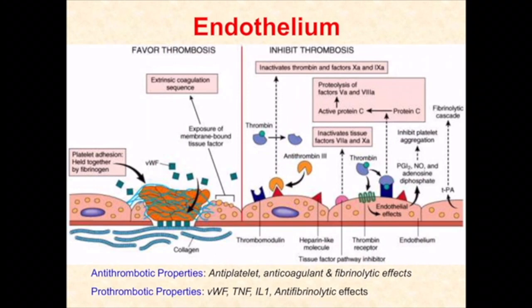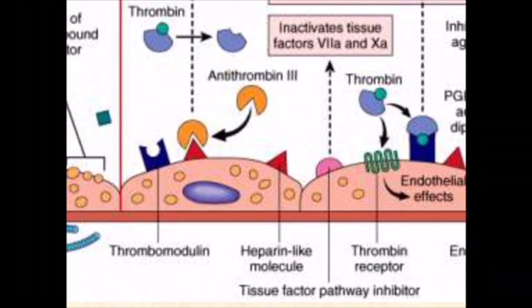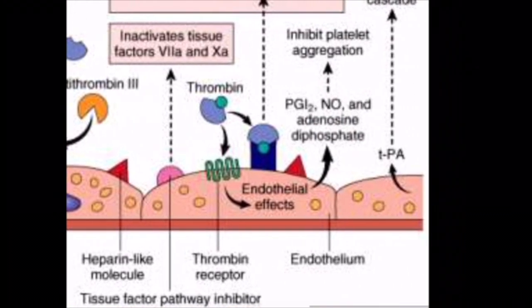This diagram represents properties of endothelium that favor and inhibit thrombosis. Factors that favor thrombosis include tissue factor released from endothelium and subendothelial collagen, which binds with von Willebrand's factor, thereby inviting platelet binding. Endothelial derivatives that inhibit thrombosis include thrombomodulin, heparin-like molecules, tissue factor pathway inhibitor, and tissue plasminogen activator.